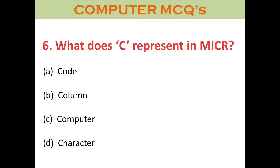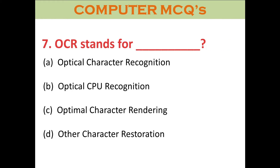Question number six: What does C represent in MICR? A. Code. B. Column. C. Computer. D. Character. The right answer is Code. Question number seven.